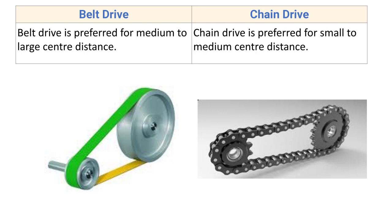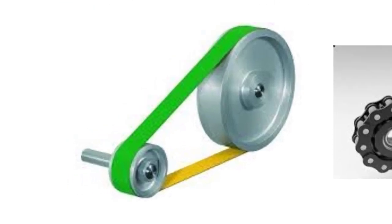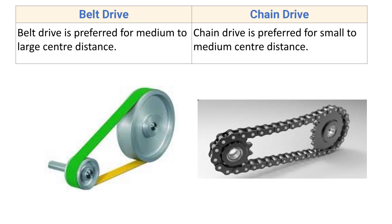Belt drive is preferred for medium to large center distance. Among different drive types, gear drive is used when the shaft distance is within 1 meter, flat belt drive is used when the distance is from 3 to 15 meters, and V-belt drive is used for distances less than 1 meter. So belt drive is preferred for medium to large center distances.